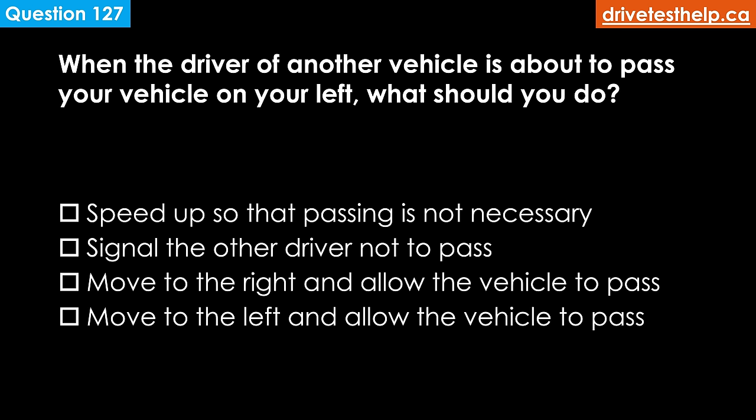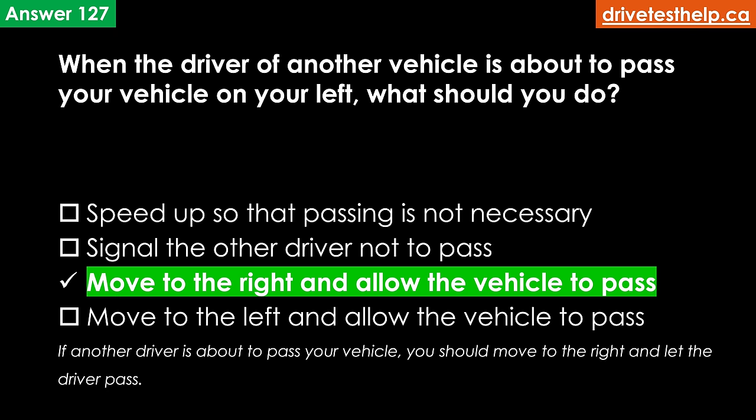When the driver of another vehicle is about to pass your vehicle, what should you do? Options: speed up so that passing is not necessary; signal the other driver not to pass; move to the right and allow the vehicle to pass; move to the left and allow the vehicle to pass. The correct answer is move to the right and allow the vehicle to pass.